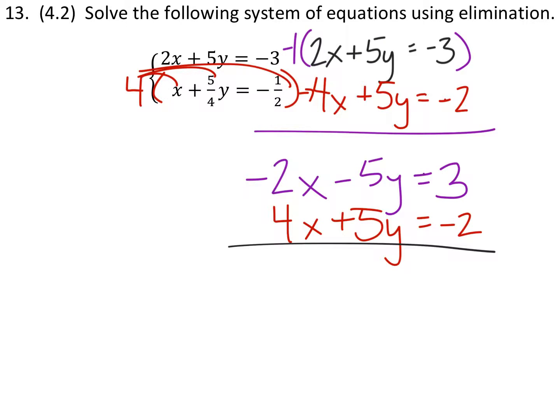So combining these two equations now, we'll eliminate this 5y stuff, and we can see they just cancel out and become a zero. And negative 2x, and that's a positive 4x, that would give us a positive 2x, equals that 3 minus 2 is 1. So we find here that x is 1 half.